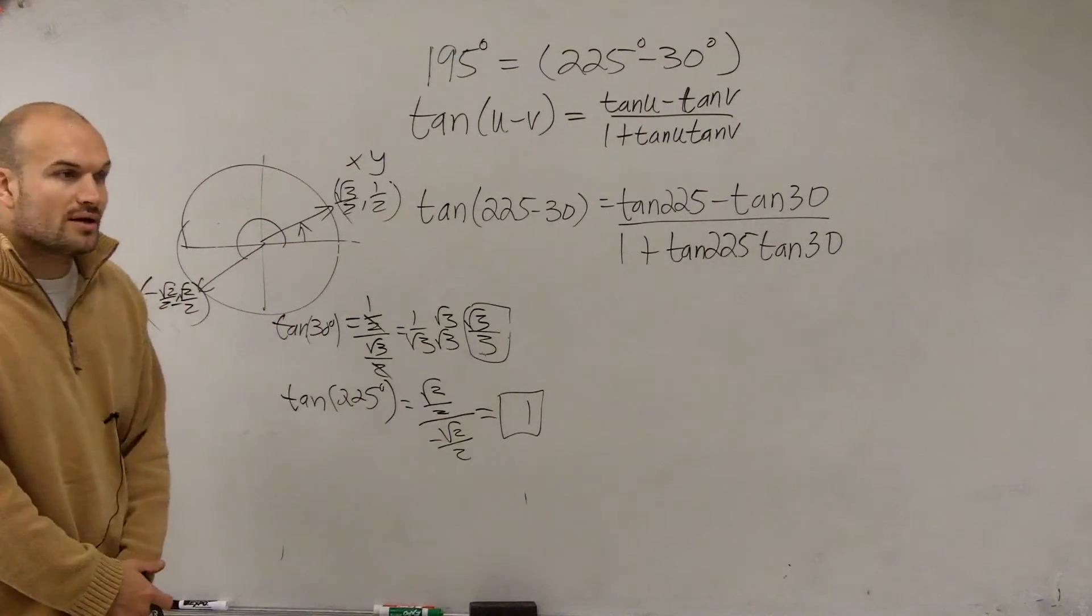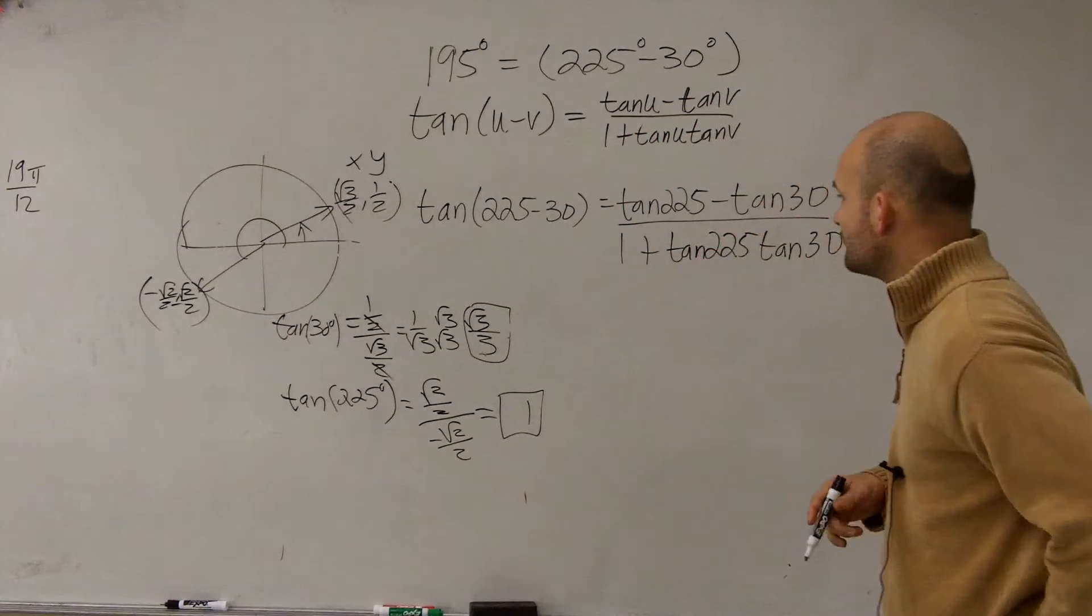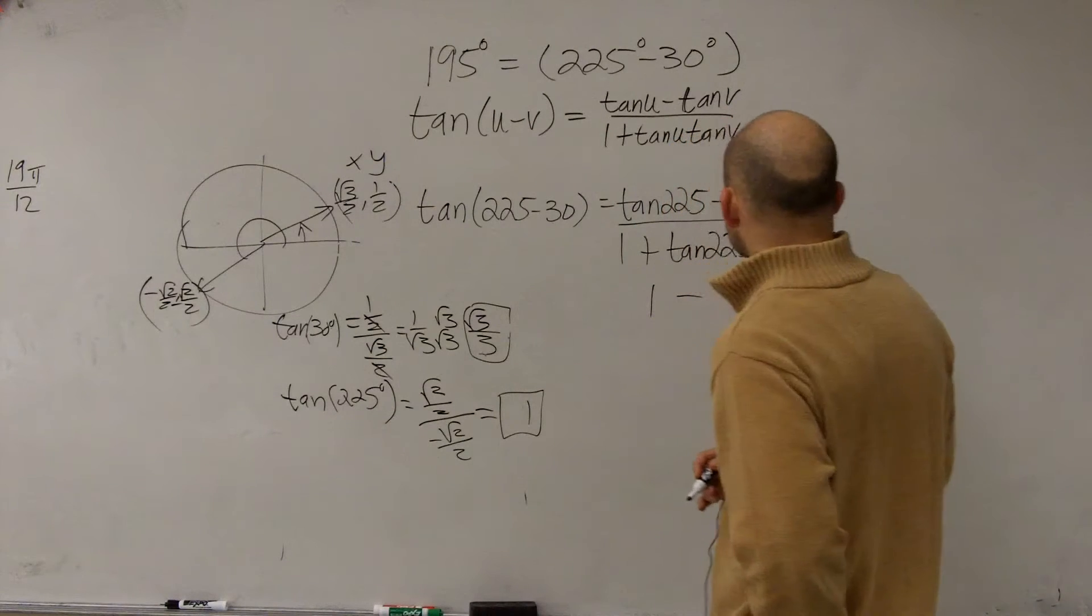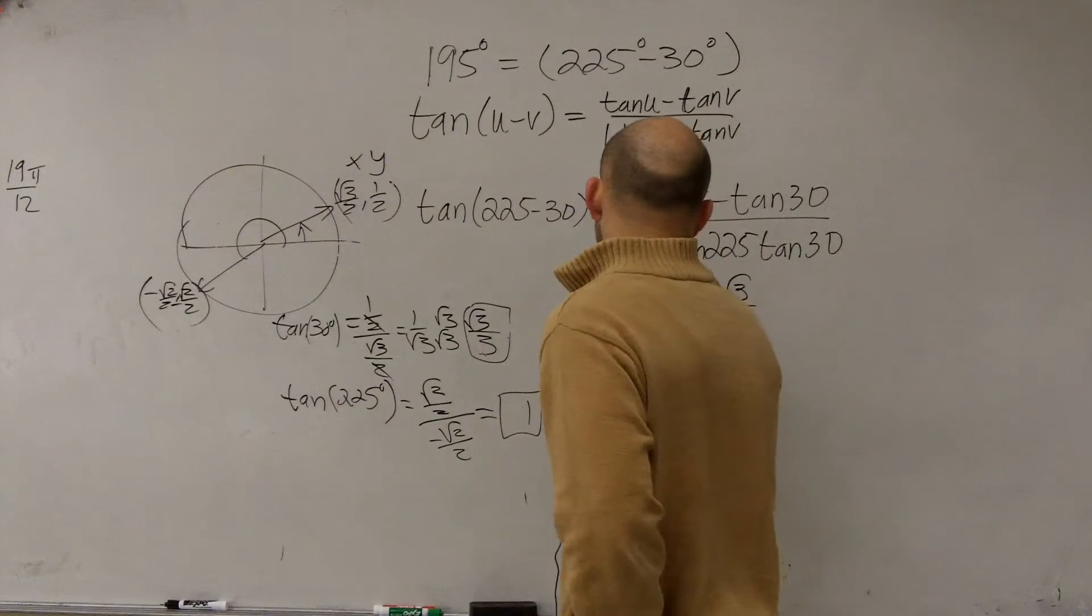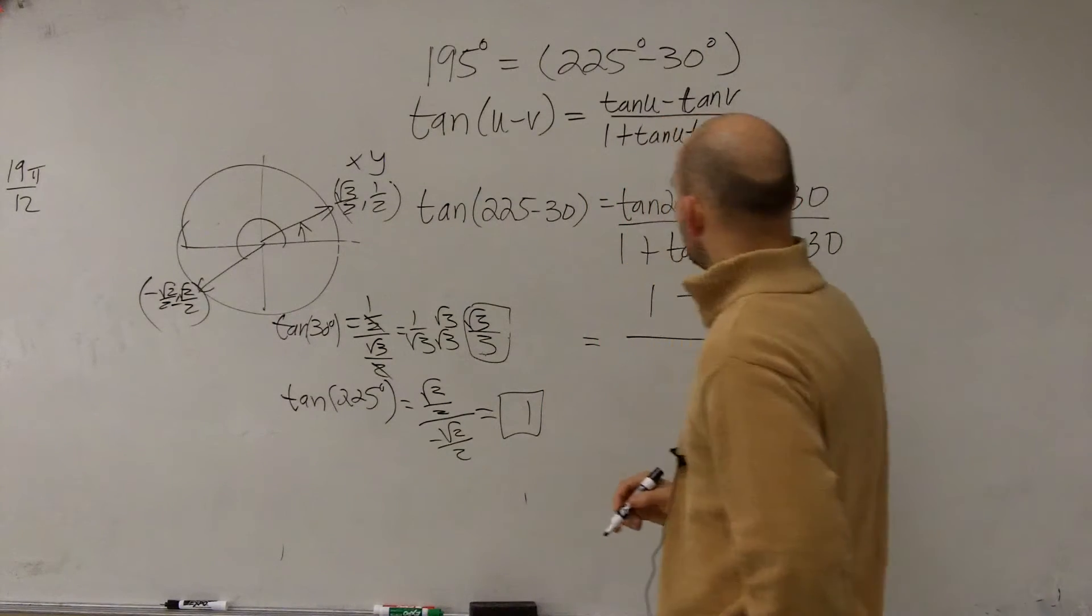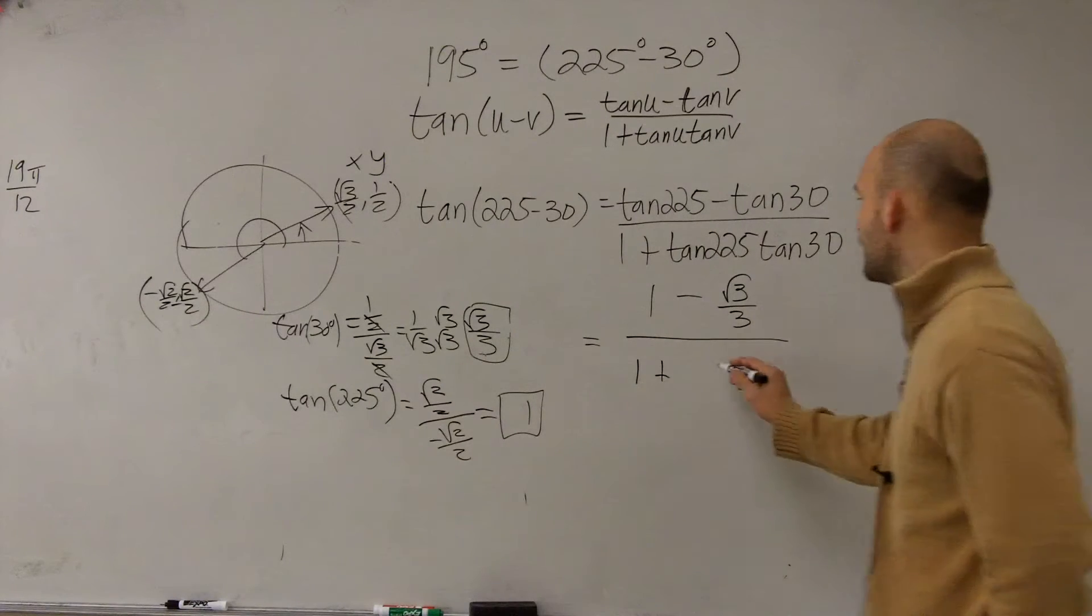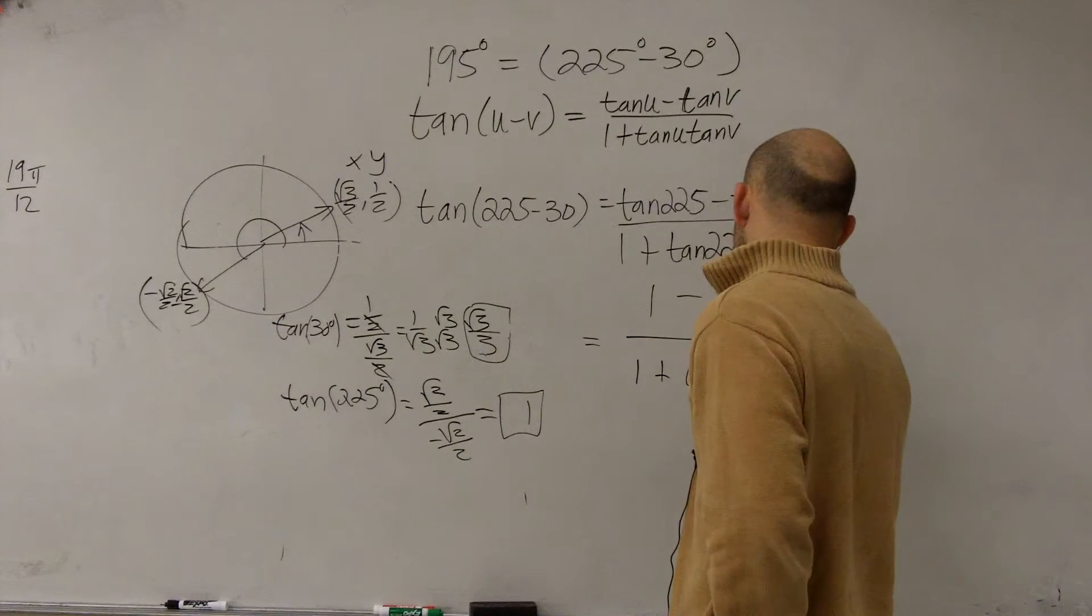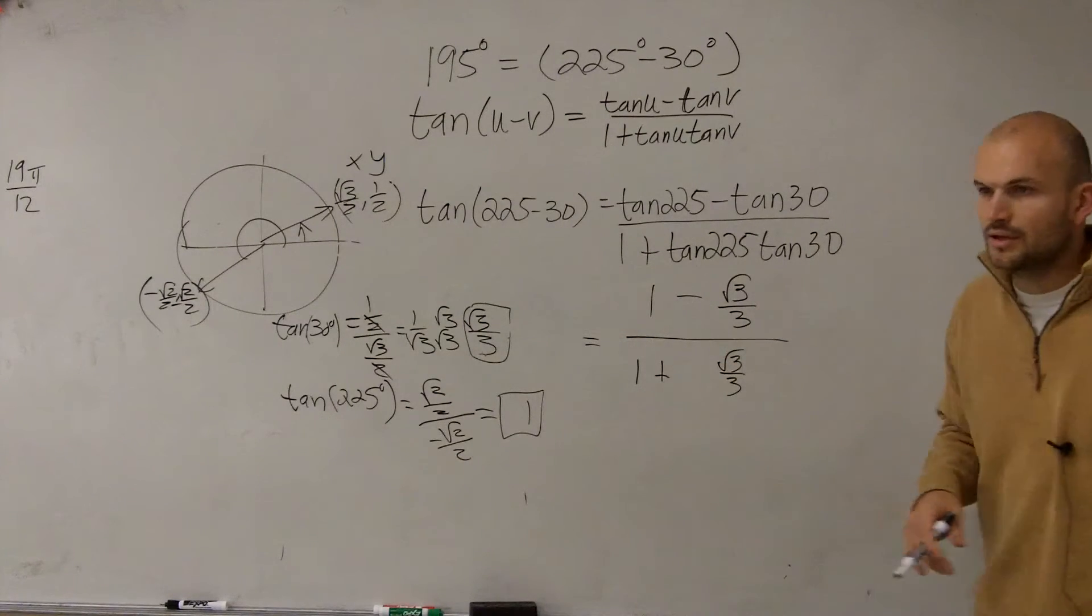So now, let's plug them in. So the tangent of 225 degrees is 1 minus the tangent of 30, which is going to be the square root of 3 over 3, over 1 plus the tangent of 225 degrees, which is 1, times the tangent of 30, which is the square root of 3 over 3. Now, you guys understand that 1 times the square root of 3 over 3 is just the square root of 3 over 3, right? So we don't really need to write the 1 there.